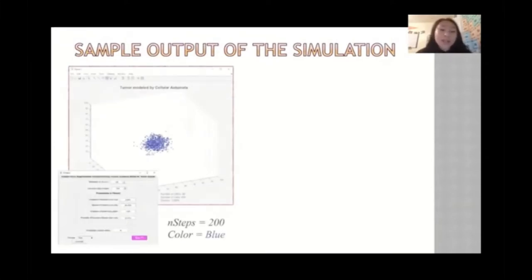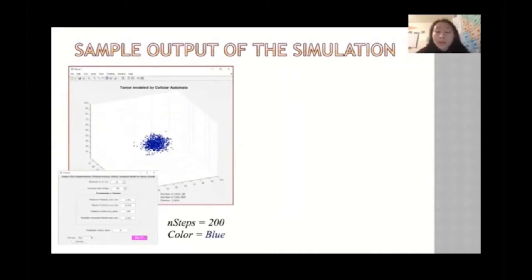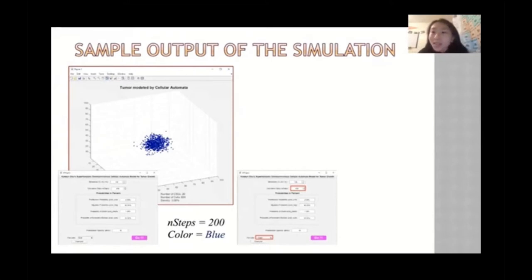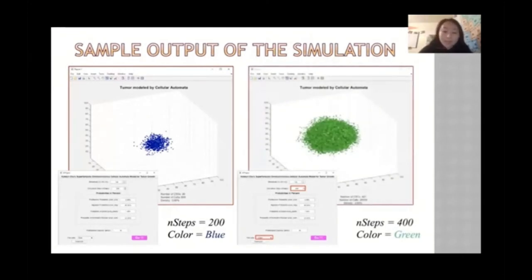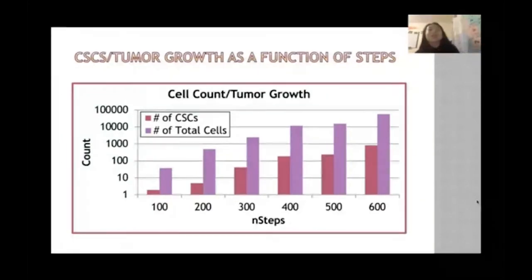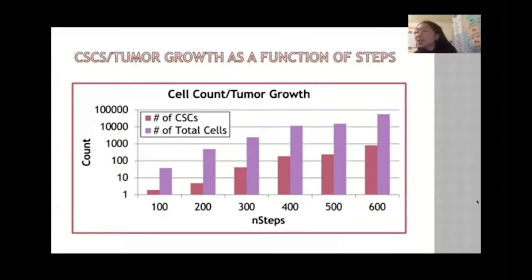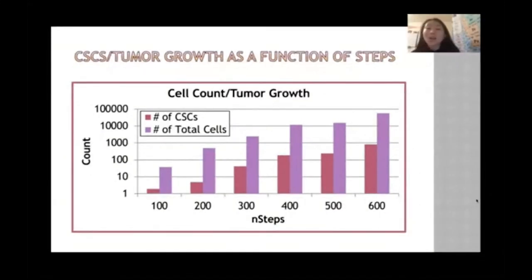Here we can see sample outputs of the simulation. We input these parameters and it generates a tumor plot. Using the same parameters but changing the color to green and increasing simulation steps from 200 to 400, the result looks very different. Looking at how tumor growth is affected by the number of steps, the more simulation steps the program takes, the more cells there will be — which makes sense because over time cancer stem cells will be proliferating a lot, producing more cells.